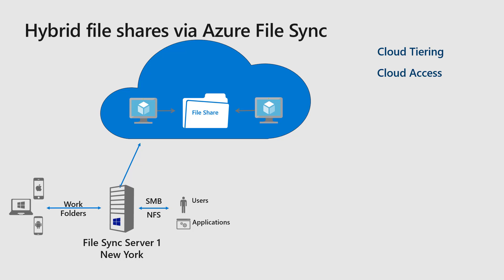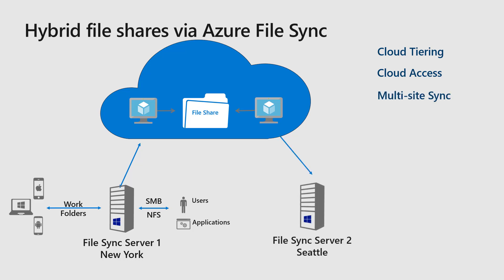We also have the capability to access the file share directly in the cloud on the Azure File Share. And we can use the Azure File Sync service to sync files between two different servers. So if you have server one in New York and server two based in Seattle, we can use Azure File Sync to replicate data between those two servers so users can access it in both office locations.